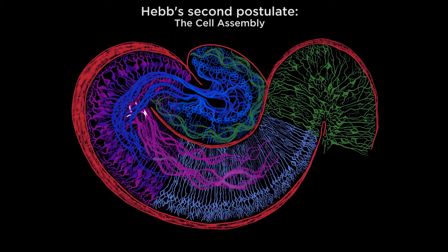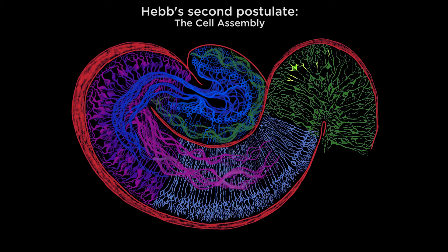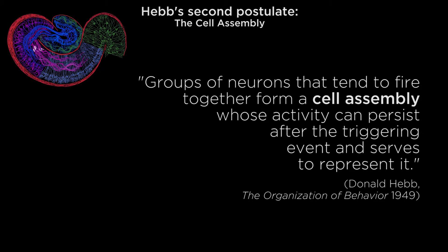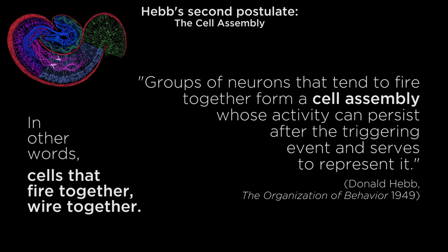Hebb suggested that any frequently repeated stimulation will lead to the slow development of a cell assembly. What we see here is that in the hippocampus, a group of neurons are able to function as part of a cell assembly. That is, given a strong enough stimulus, a series of connected cells will become potentiated and function as a unified system in response to subsequent stimulation. This is known as the Hebbian cell assembly. As Hebb stated, groups of neurons that tend to fire together form a cell assembly whose activity can persist after the triggering event and serves to represent it — or, in other words, cells that fire together wire together.